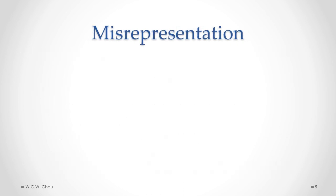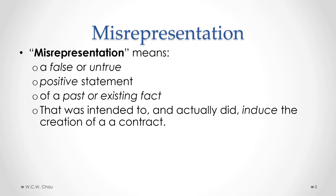Quite often there are many things said in negotiations between parties that lead up to a contract. Sometimes something is said that turns out to be untrue, and one of the parties relies on that untrue statement in deciding to enter into the contract. This describes a contractual defect called misrepresentation. The definition of misrepresentation is broken into four parts: a false or untrue positive statement of a past or existing fact that was intended to and actually did induce the creation of a contract.